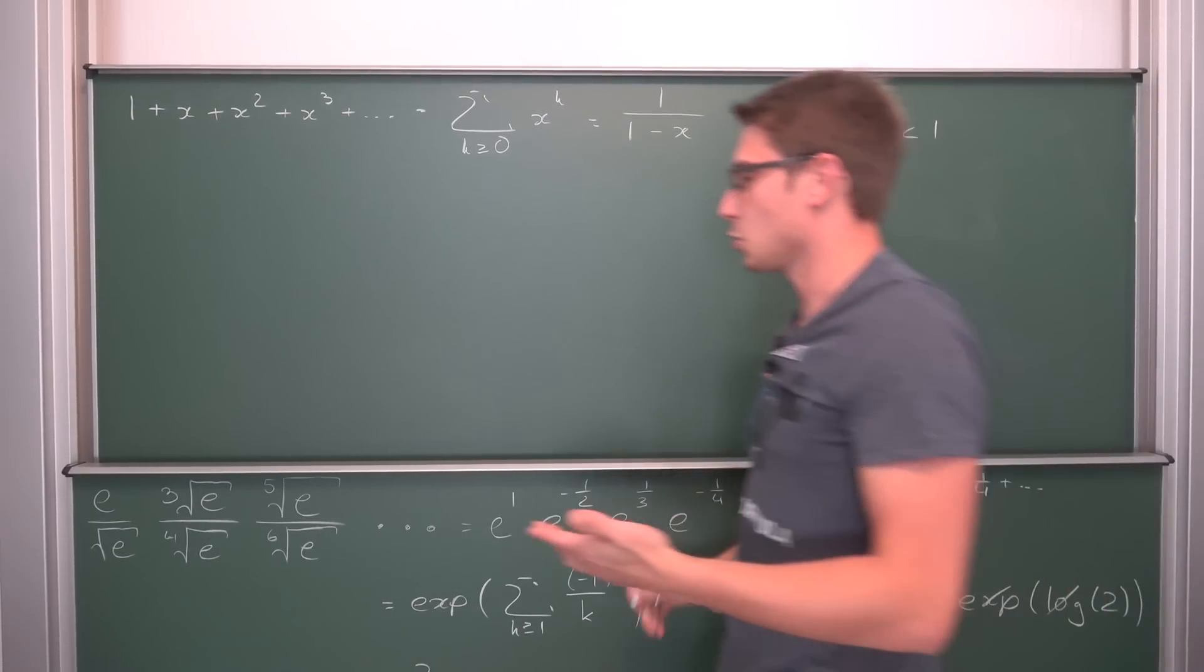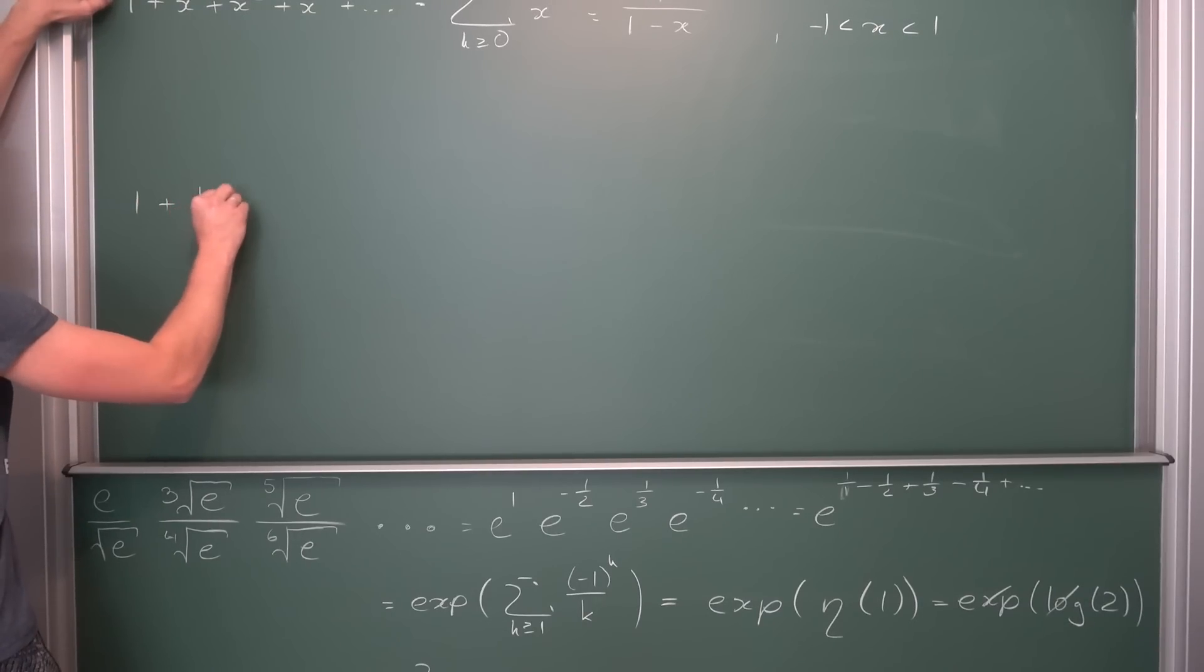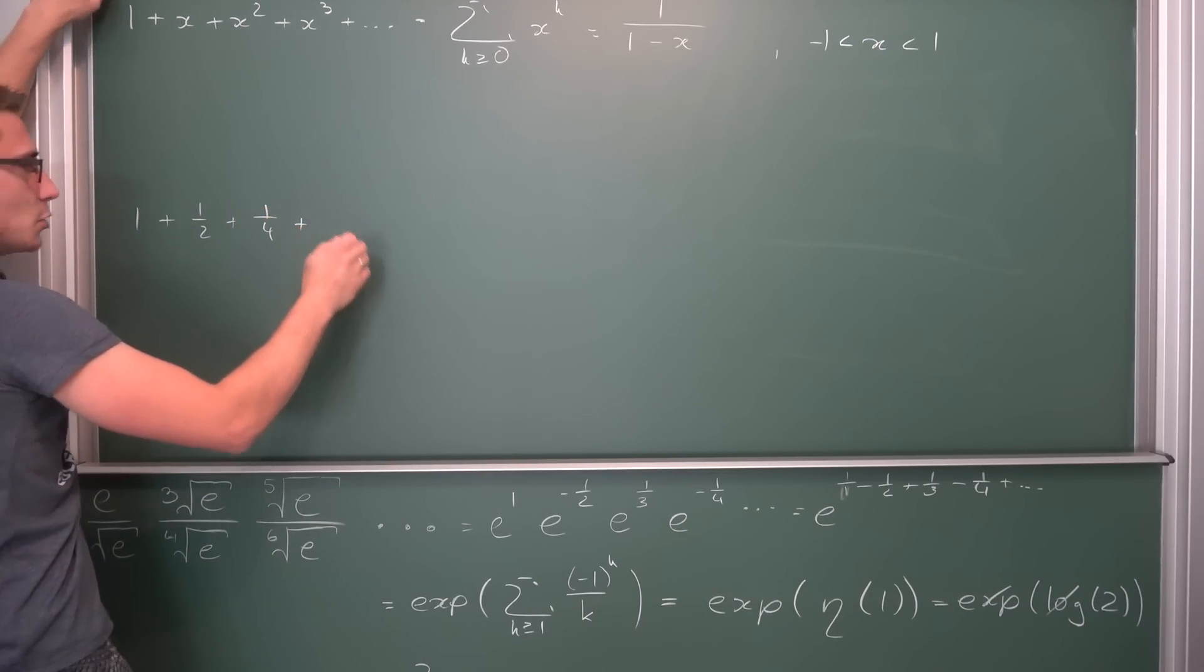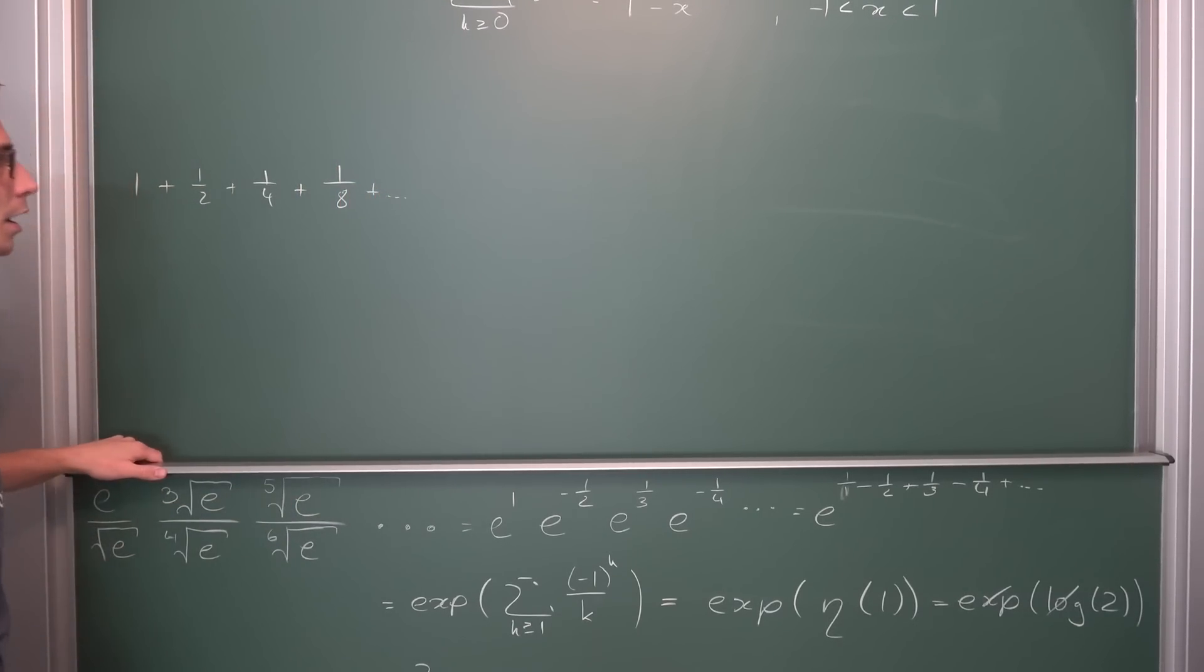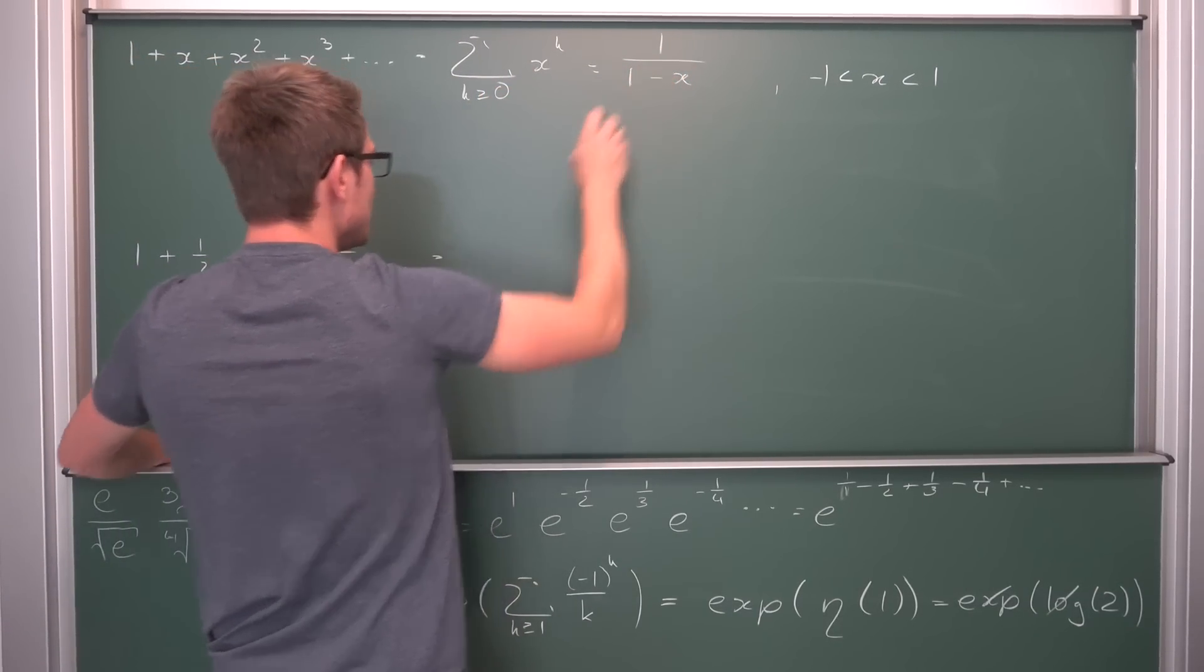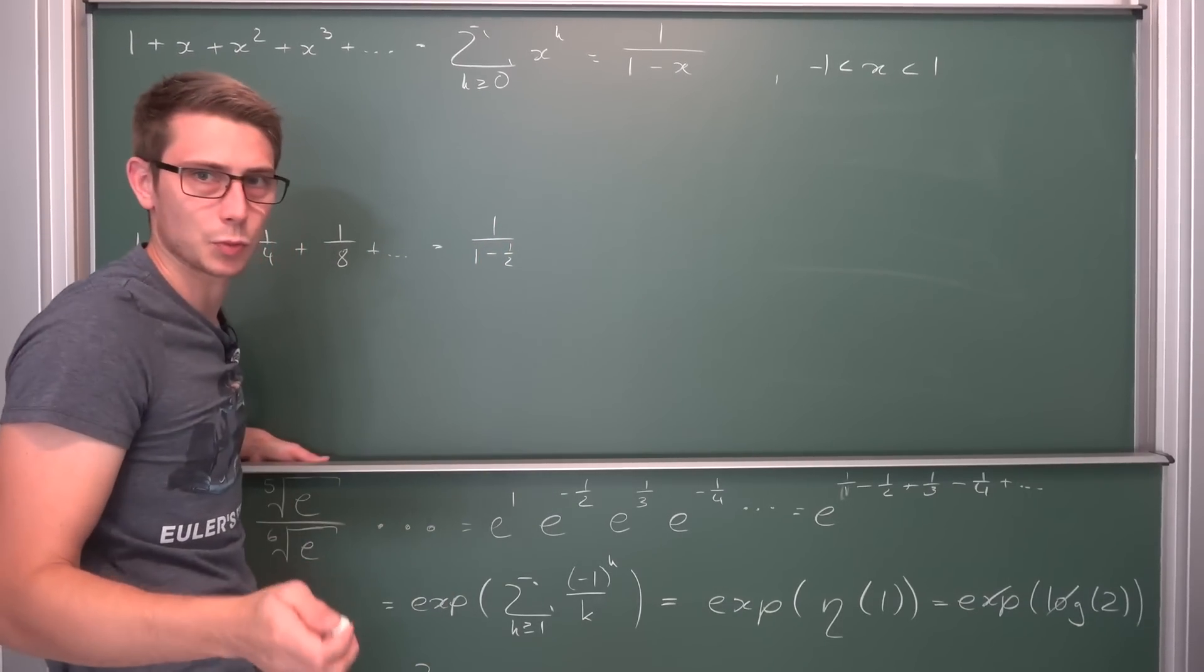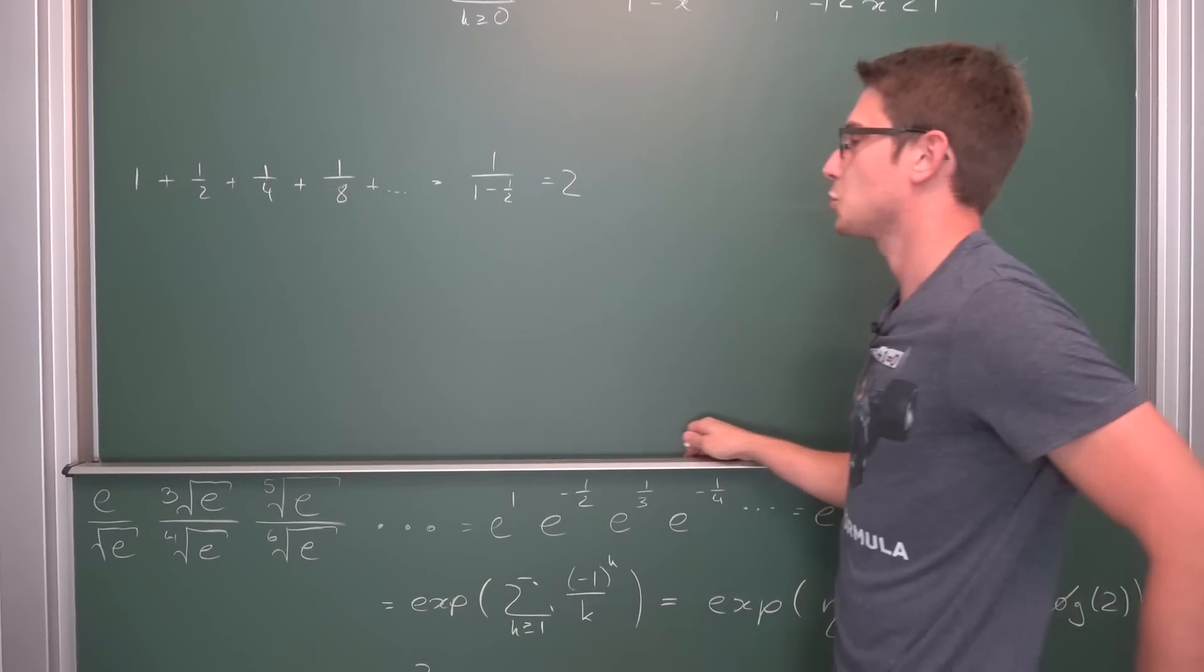But only under one condition, namely that our x is bounded between one and negative one. This is the convergence condition. Now how can we get a nice infinite product out of that? The first thing that came to my mind was to plug one-half into here. It fits into our convergence condition. Overall I think this is going to give us some kind of square roots.